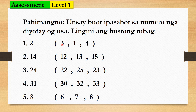Okay, arin na ta sa assessment. Jutay o gusa sa 2 — is it 3, 1, or 4? Encircle your answer. Number 2 — unsa may number nga mas jutay o gusa sa 14? Is it 12, 13, or 15? Sulingini ang imong tubag. Number 3 — pangitaan ang number nga mas jutay o gusa, or nag-una sa 24. Number 4 — 31. Unsa may number nga mas jutay o gusa sa 31, or that comes before number 31? Is it 30, 32, or 33?